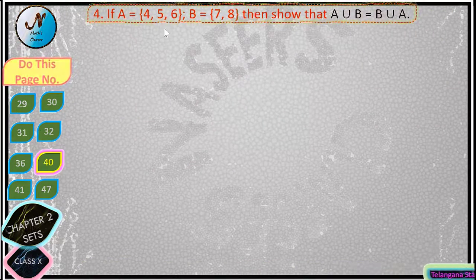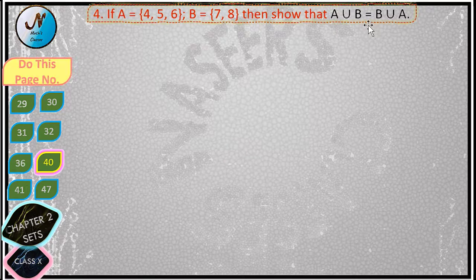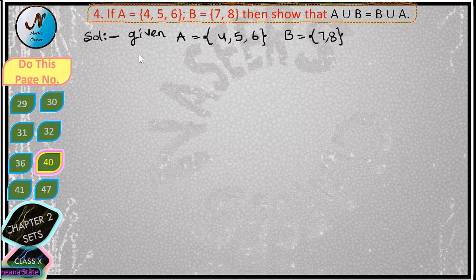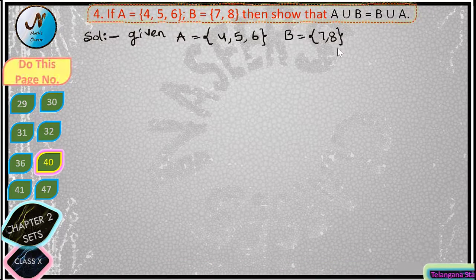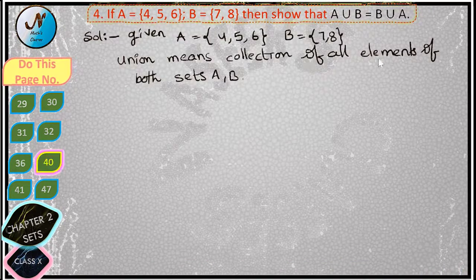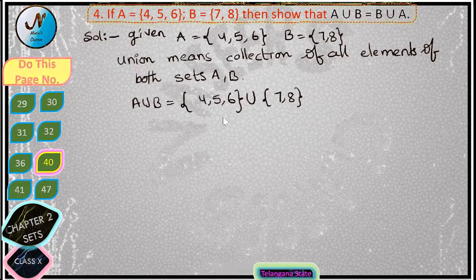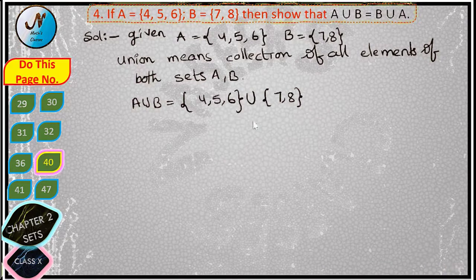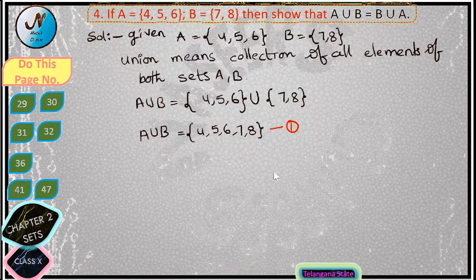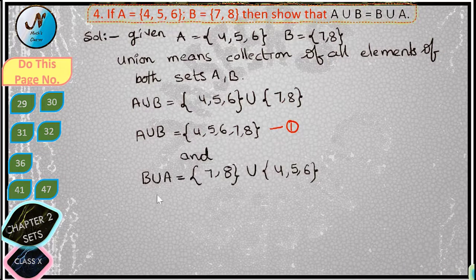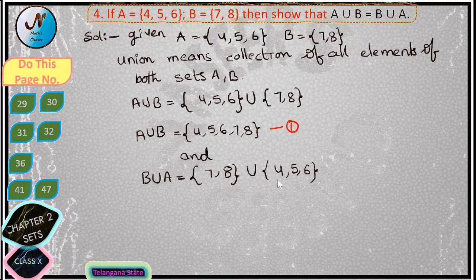Next we solve the fourth problem. Given set A and set B, show that A union B is equal to B union A. Set A is equal to {4, 5, 6} and set B is equal to {7, 8}. We already know that union means the collection of all elements of both sets. So A union B is equal to {4, 5, 6} union {7, 8}, which gives us A union B is equal to {4, 5, 6, 7, 8}. Let this be equation one.